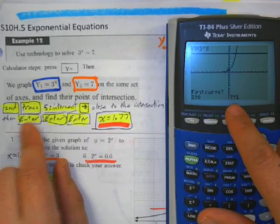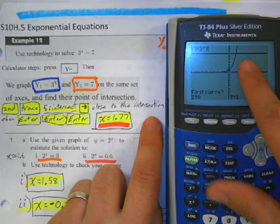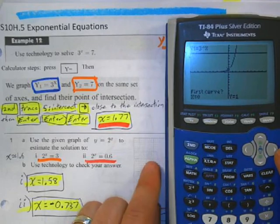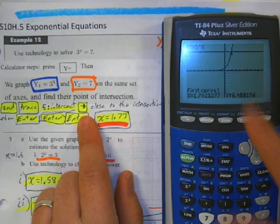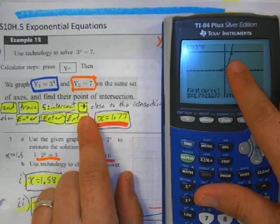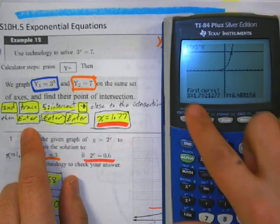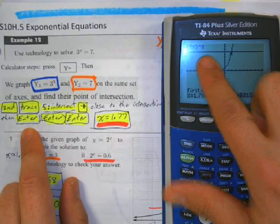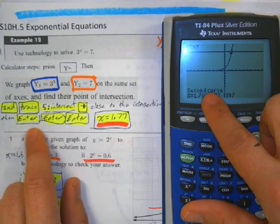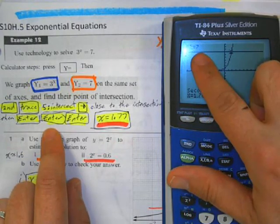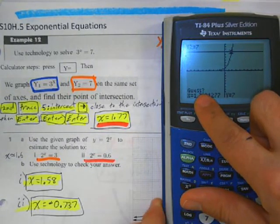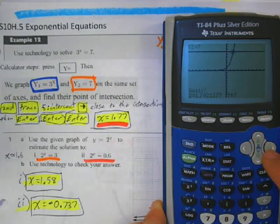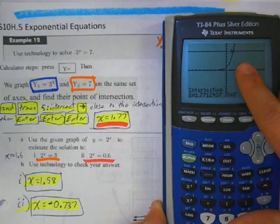And then we want to get close to the intersection. So I'm going to hit the right arrow, which is going to get me close to the intersection. It doesn't have to be exact. And it says first curve, and it's got the equation. I hit enter. Now it says second curve, and it's got the equation y equals 7. I hit enter. Now it says guess. You just have to hit enter.